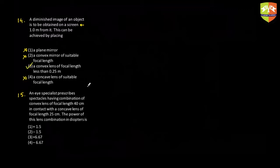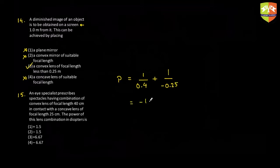Question 15: An eye specialist prescribes spectacles having a combination of convex lens of focal length 40 cm in contact with a concave lens. To find the power of the combination, we write combined power as 1/f1 + 1/f2, with focal lengths in meters. The concave lens contributes −1/0.25. The result is −1.5, giving a combined power of approximately −1.5 diopters.